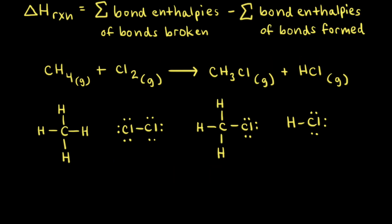Bond enthalpies can be used to estimate enthalpies of reactions. To find the change in enthalpy for a chemical reaction, you take the sum of the bond enthalpies of the bonds broken and subtract the sum of the bond enthalpies of the bonds formed. The minus sign is there because energy is given off when bonds form. A good way to remember this: B comes before F in the alphabet, so it's bonds broken minus bonds formed.